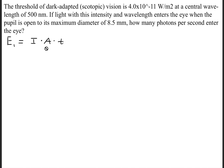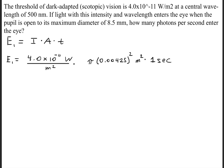Now the area occurs at the pupil of the eye, and the simple geometric shape of that is just a circle, and the area of a circle is pi r squared. This t right here is simply the time, and we're measuring the energy in one second. So we'll go ahead and plug in the values here.